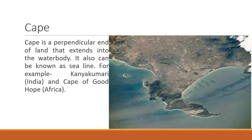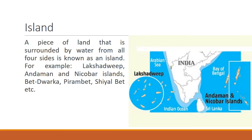Now let's study the parts of land. The first one is cape. A cape is a perpendicular — meaning vertical — end of land that extends into a water body. The piece of land is straight and its length increases into the water body. It can also be called a sea line. For example, Kanyakumari in India and the Cape of Good Hope in Africa. On the map of Africa, we can see the region that is vertical and comes out into the water body.